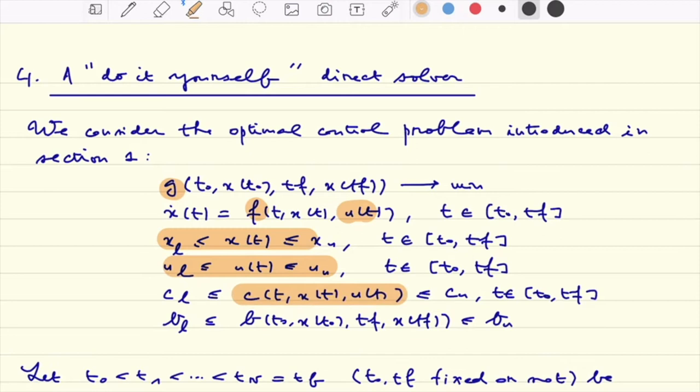Some path constraints defined by some function c. Again G, F, C, and B are supposed to be smooth, defining the boundary conditions. t0 and tf are not supposed to be fixed; they could be free. Of course it is easier if they are fixed.